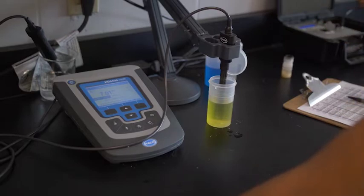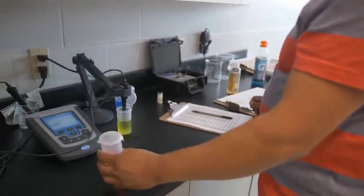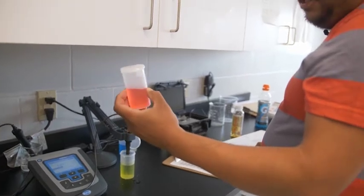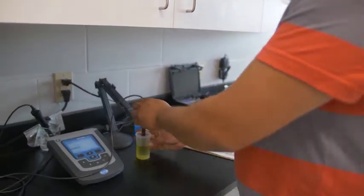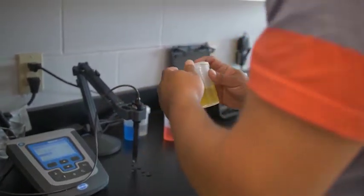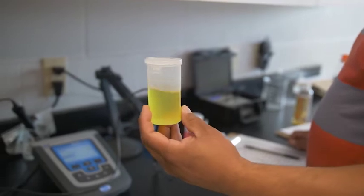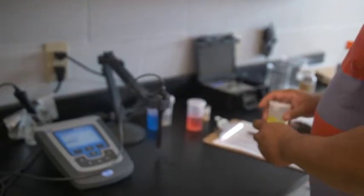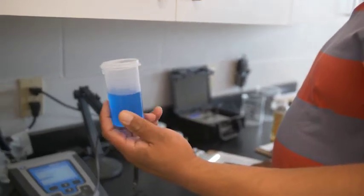So this is a pH of 4, it's called a buffer solution. We use it for calibrating, it gives us a pH of 4. This is also a buffer solution here as well. Again we use it for calibration of the pH probe. This gives us a buffer of 7. And this is another buffer here, this gives us a pH of 10.